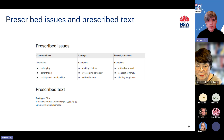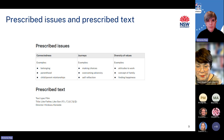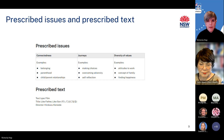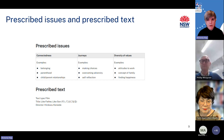Students engage with the prescribed issues through the study of the prescribed text and related texts. Please note that the related texts are not prescribed — they can be chosen by the teacher, and we have included samples of relevant texts in all our support material documents. On the slide, you can see the prescribed issues and texts for Japanese extension. The prescribed text is the film Like Father, Like Son — Soshite Chichi ni Naru — and the prescribed issues are connectedness, journeys and diversity of values. The prescribed issues are mandatory; however, the dot points are not. The examples are suggestions only and are included to give a sense of the scope of the prescribed issues.